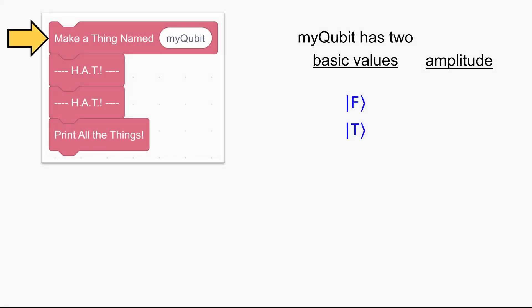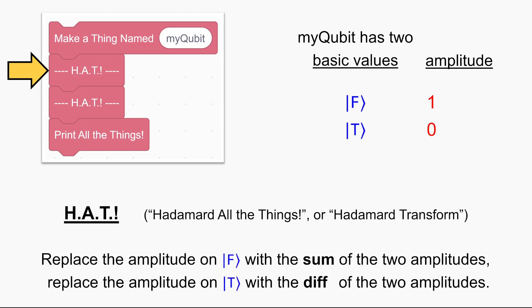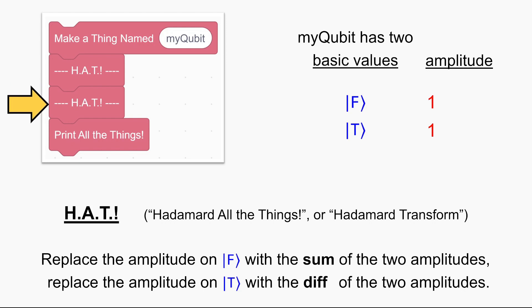Just as before, when we first make my qubit we have all one of the amplitude on false. Then we come to the first Hadamard instruction, which replaces the amplitude on false with the sum and the amplitude on true with the difference. The sum is 1 plus 0, which is 1, and the difference is 1 minus 0, which is also 1. So after the first Hadamard we have amplitude one on false and amplitude one on true — this is just like in the first version where we'd see a 50-50 chance. But now we do the second Hadamard. The new amplitude on false will be 1 plus 1, and the new amplitude on true will be 1 minus 1. So after the second Hadamard we have amplitude 2 on false and amplitude 0 on true.